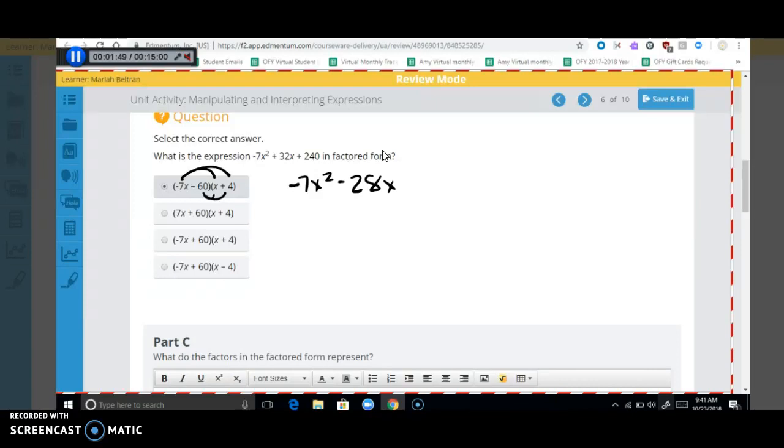Let me do this. Minus 60x minus 240. So we get negative 7x squared minus 88x minus 240. So not quite right, so it wouldn't be this one. So what you're going to do, you're going to go down the line and figure out, just by foiling them, which one will be correct.